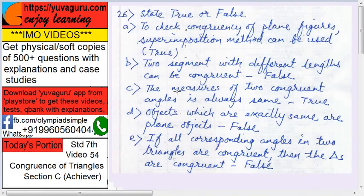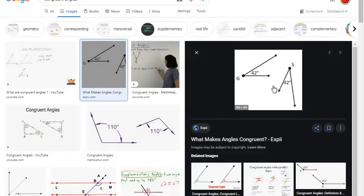The measures of two congruent angles is always the same. That is true. See this, these two angles G and S, they can be put in any direction, but if the measures are equal, they are congruent.